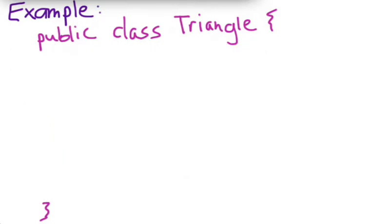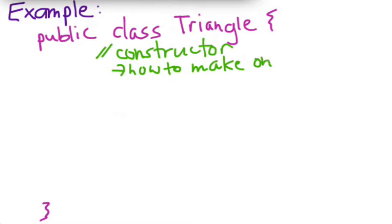So what is inside of a class description? There are three major components. The first one is a constructor. A constructor is actually a special type of method that tells you how to make a new triangle object, so how to make one. It actually creates the triangle for us. So that's a specific type of method that you always have to have in a class.